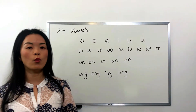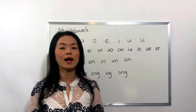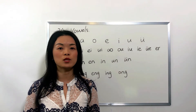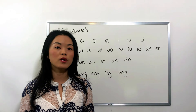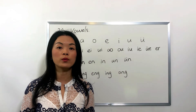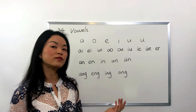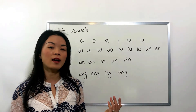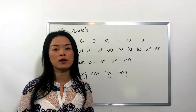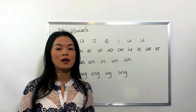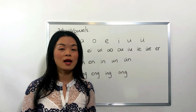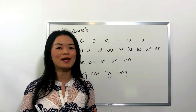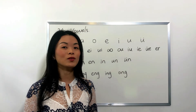So altogether we have 24 vowels in Chinese Pinyin, and in the future we will learn the tones — all the vowels can have tones with them. As you know, we have 5 tones. I'm going to cover that in my next video.